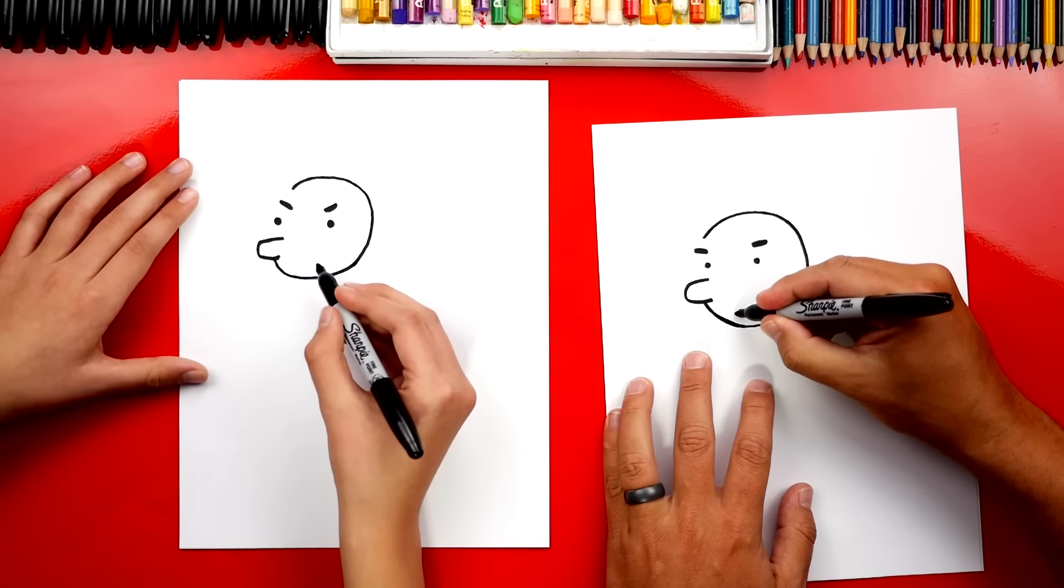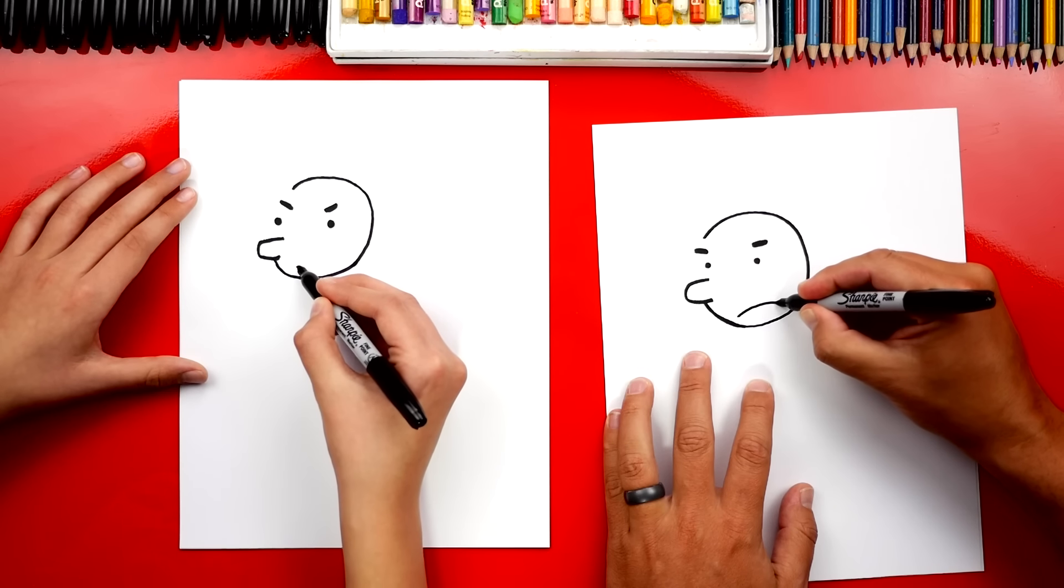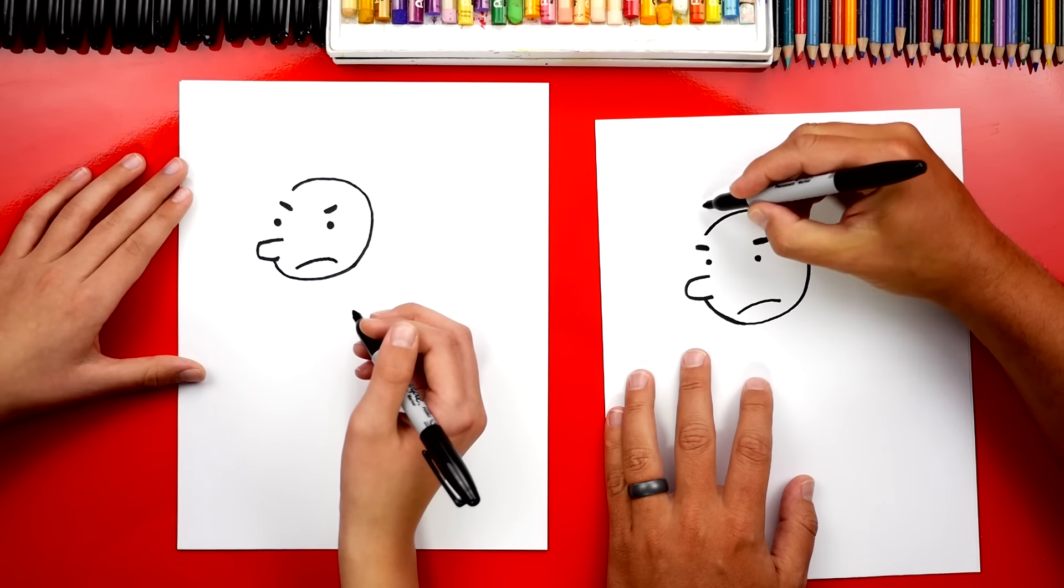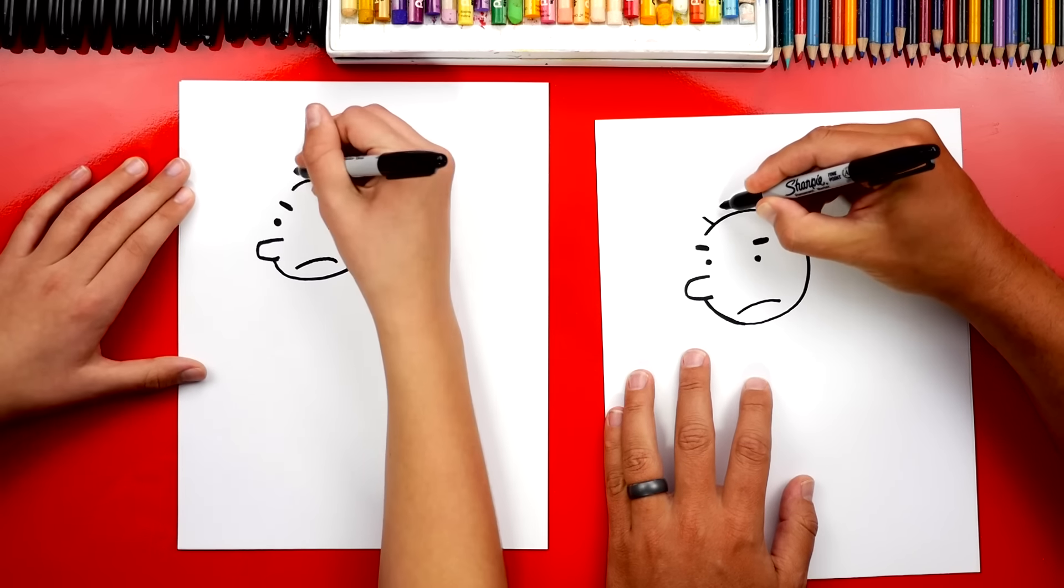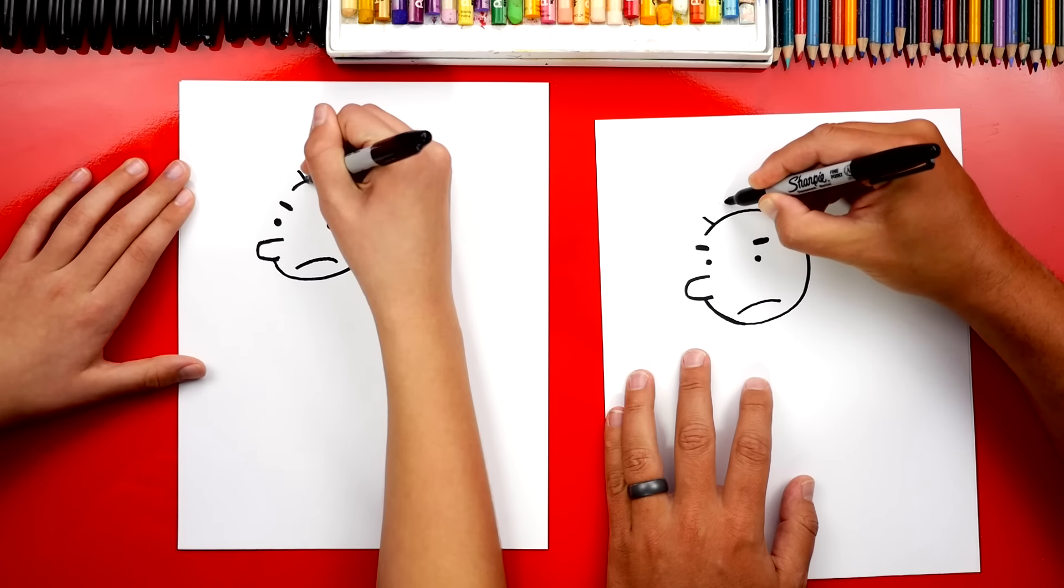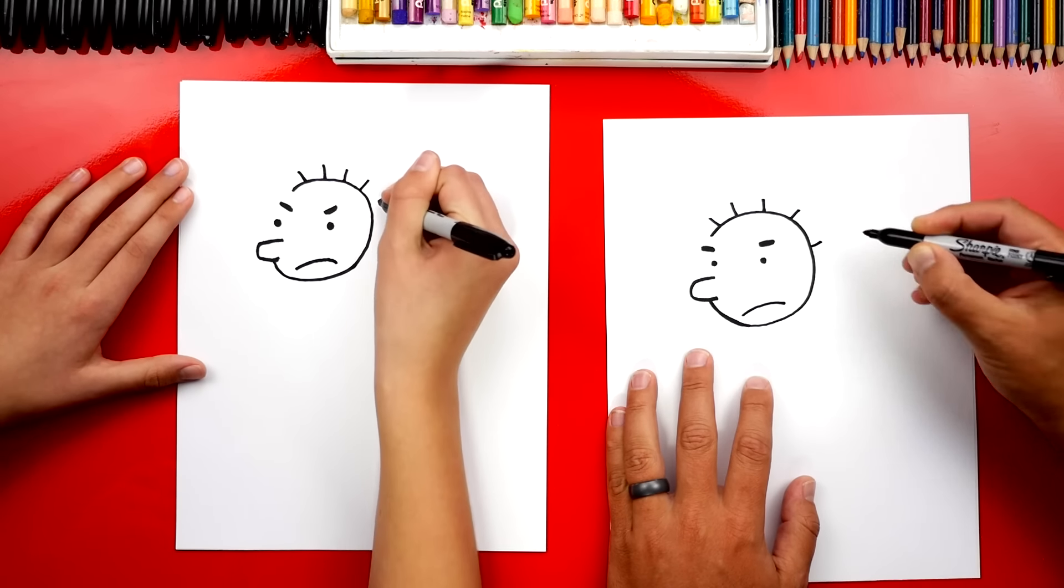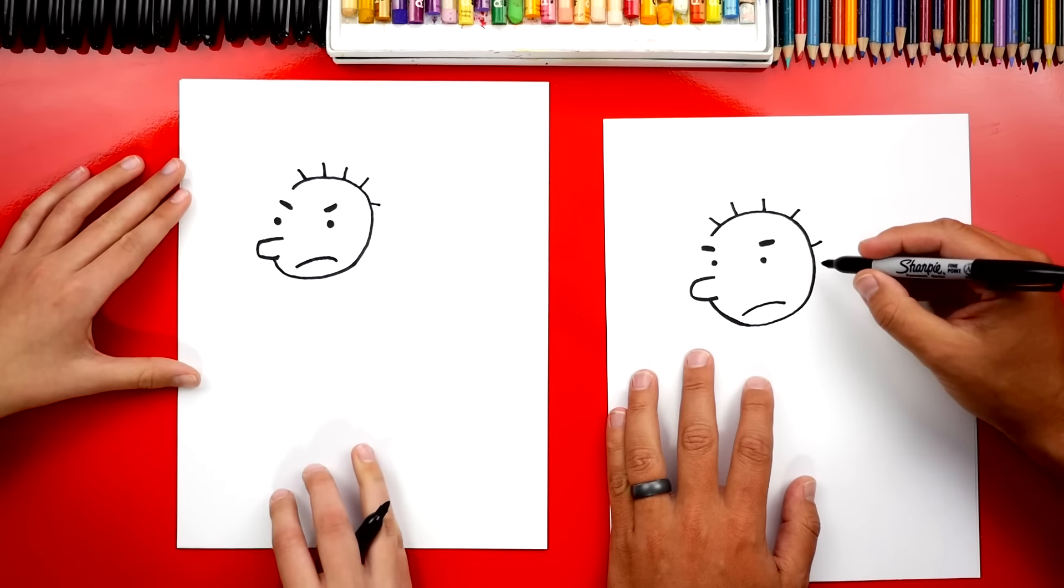Then we can draw his mouth, and we're going to draw a frowny mouth. There we go. Then we need to draw his hair, and let's just add five lines. We're going to do one, two, three, four, five. He almost has the amount of hair that you have. Good one. That's a knee slapper. Oh my gosh.